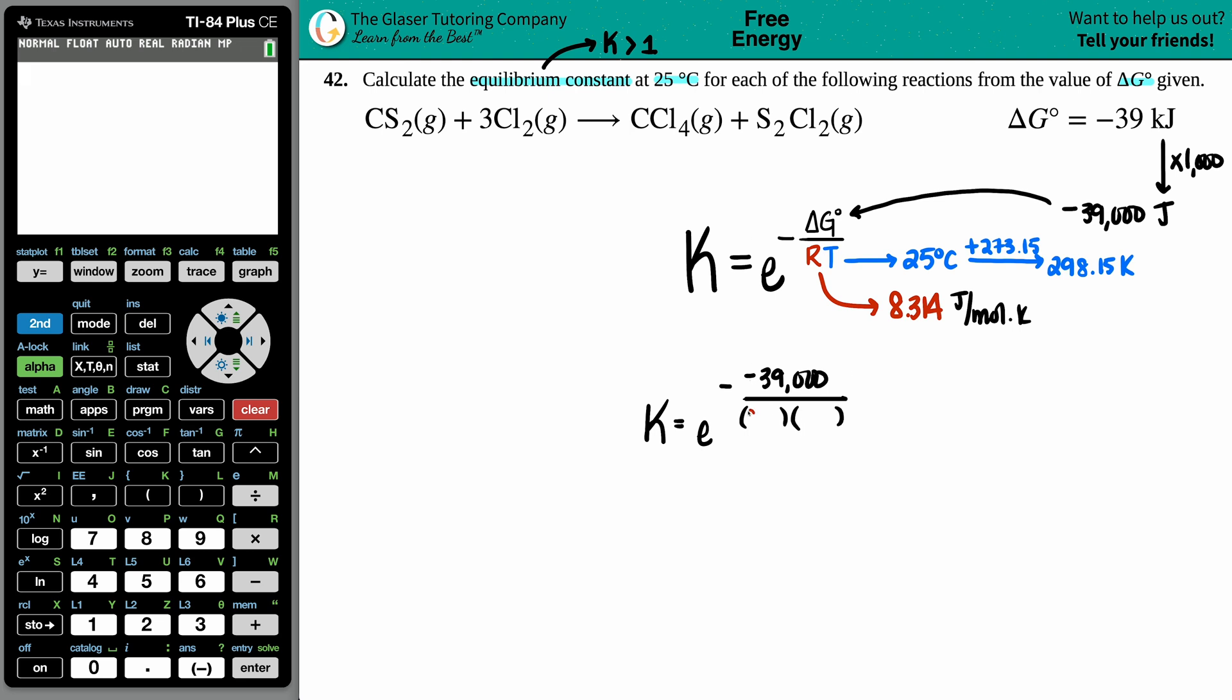We got the 8.314 going on here, and we got the 298.15. Now before I would raise this with the e button, I would just clean this up - make this one number so that you can just simply do e raised to the one number. So that's the first thing that I'm going to do. I'm going to put all of this into the calculator.